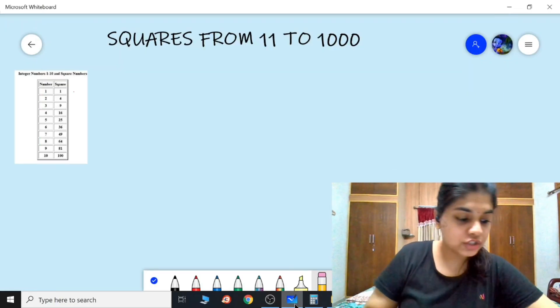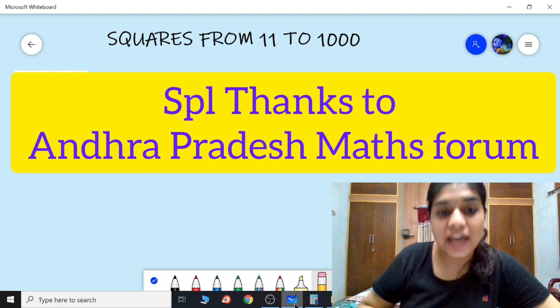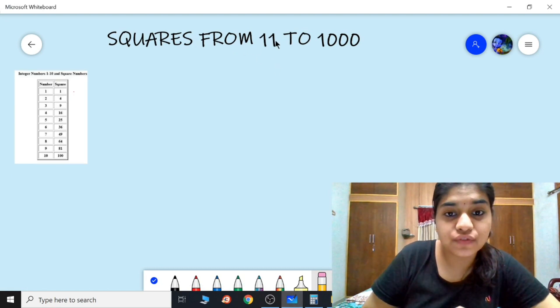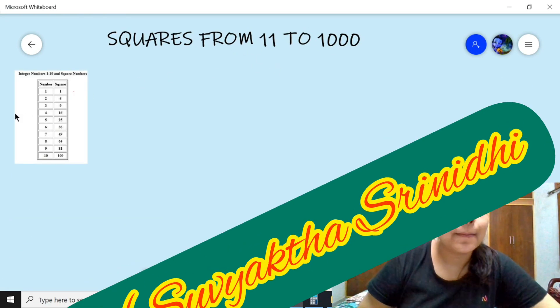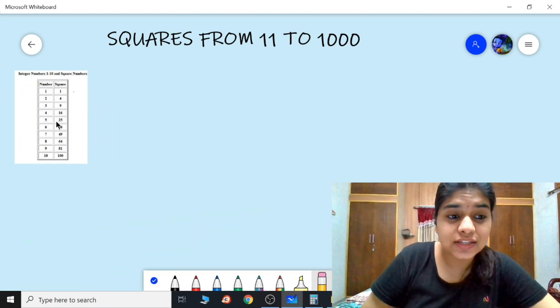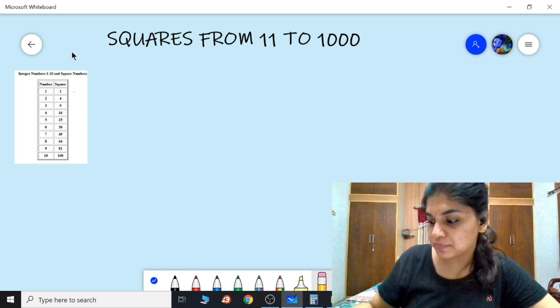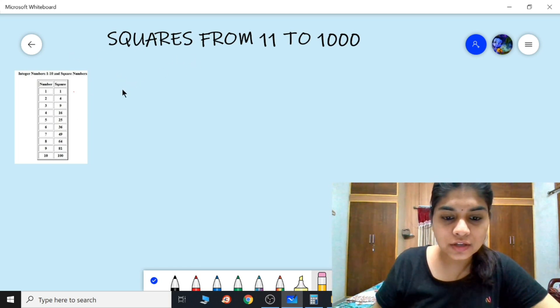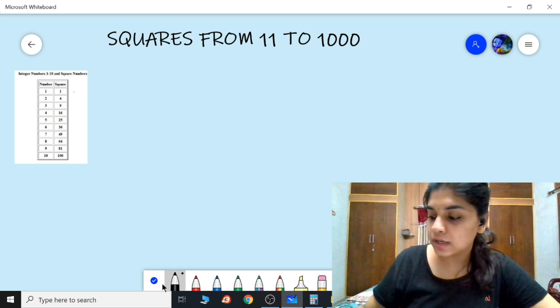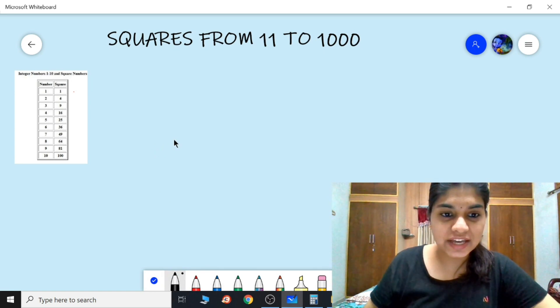Hello everyone, in today's video let's see how to calculate the squares of numbers from 11 to 1000 by just knowing the squares from 1 to 10. First let's select any two-digit number, for example I'm taking 28.